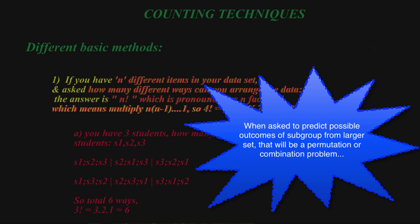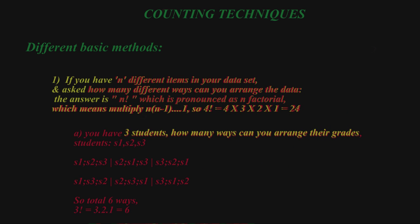Again, we're looking for 3 students. How many ways can we arrange their grades? So S1, S2, and 3 are grades. Then we're going to take 3 factorial and multiply each term until we get to 1. So there's 6 ways. Hope that makes sense.